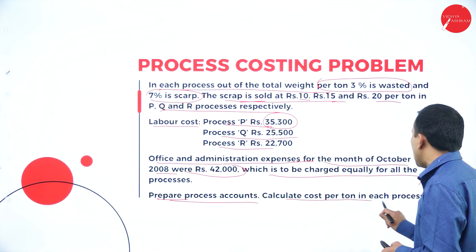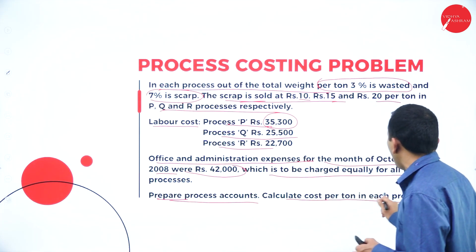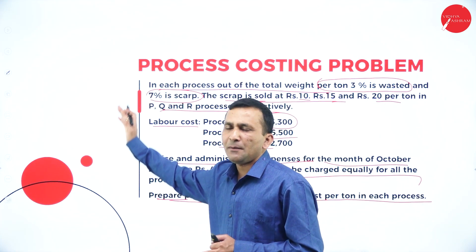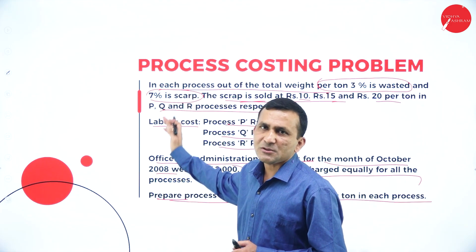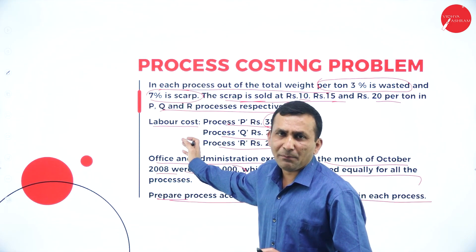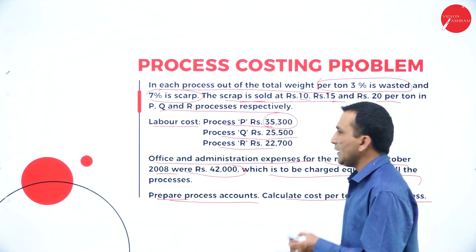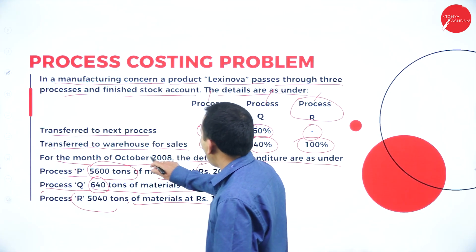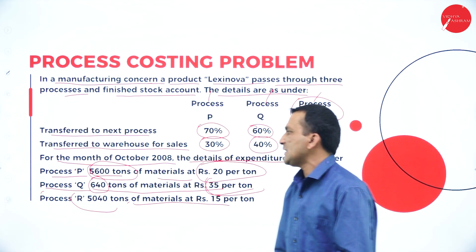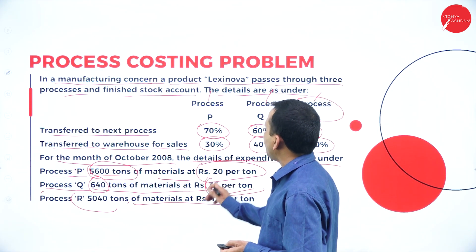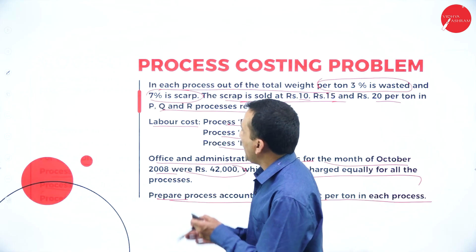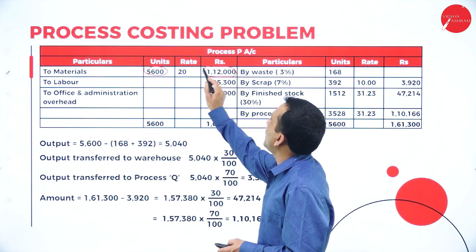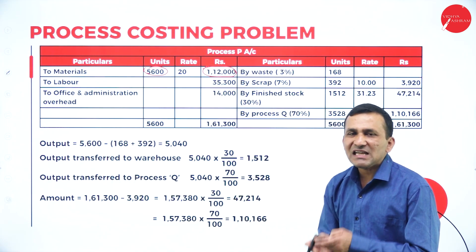Now we recall the format: the debit side has columns for Particulars, Units, Cost per Unit, and Total Amount; the credit side has the same columns. Moving to Process P: we introduce 5,600 tons at ₹20 per ton. Multiplying: 5,600 × ₹20 = ₹1,12,000 on the debit side. Apart from this, other expenditure from the question includes labour cost ₹35,200.